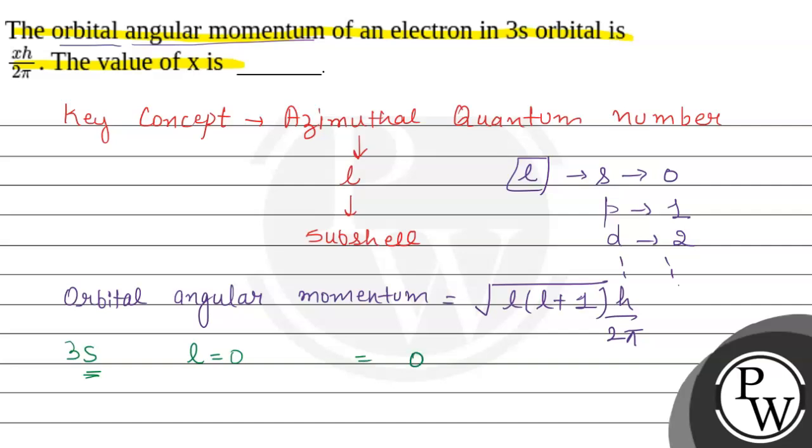So, 0 into 0 plus 1, under root, h upon 2π.